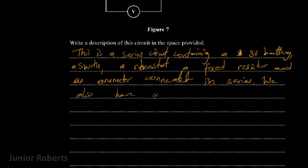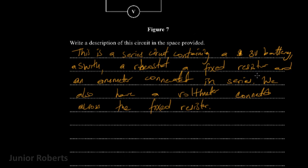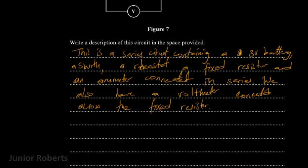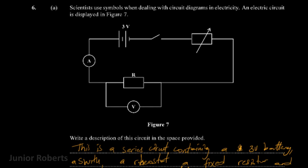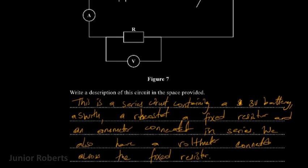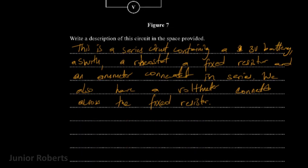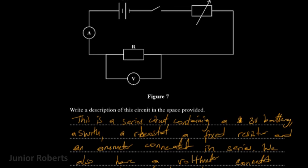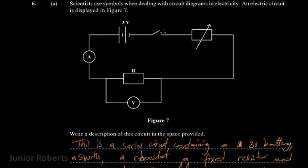We also have a voltmeter connected in parallel across the fixed resistor. So we've described the circuit as a series circuit, listed all the components in series, and indicated that the voltmeter is connected in parallel to the fixed resistor. That gives us a complete description of the circuit. Let's move on.